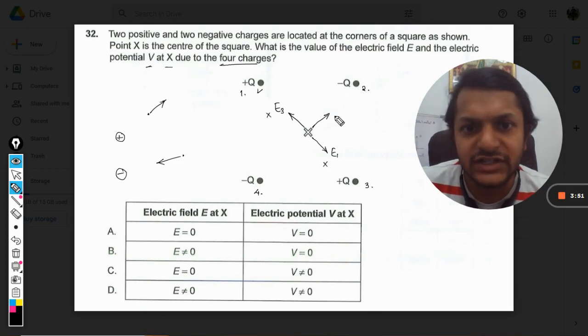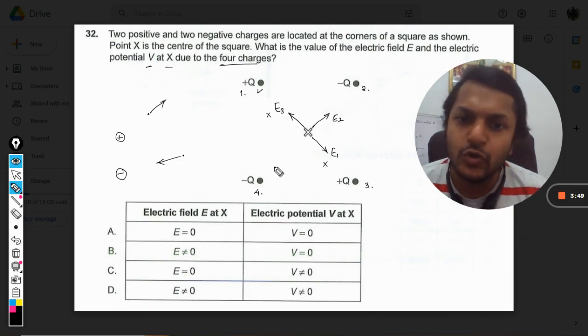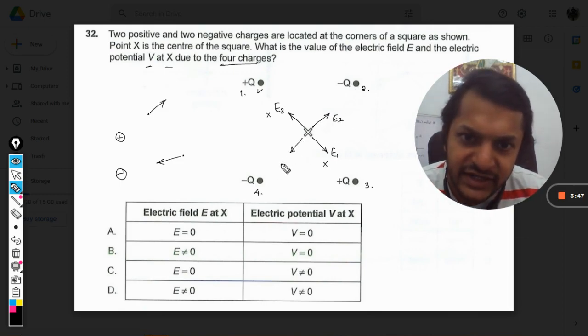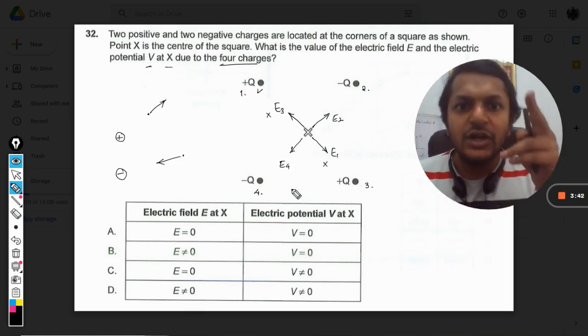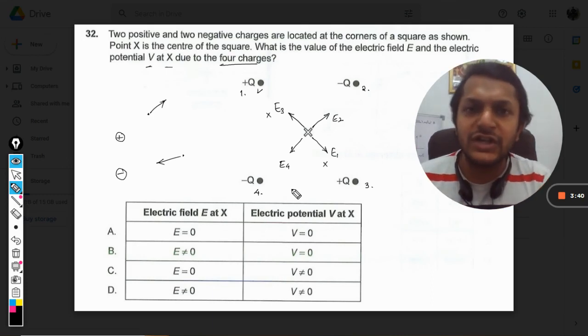And along with that, this second charge, that is minus Q, will have an electric field towards itself. So you can write it as E2. And E4 will be casting an electric field like this, which is E4.